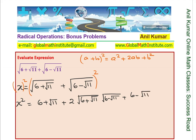We can simplify: 6 plus 6 gives us 12. Now we have 12 plus 2 times square root of (6 plus square root of 11) times (6 minus square root of 11). That product of conjugates gives us a square root of a squared minus b squared.